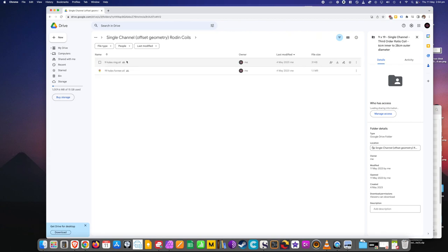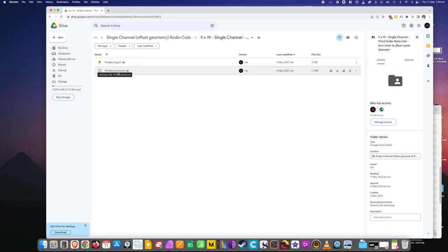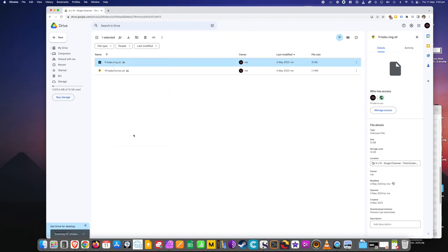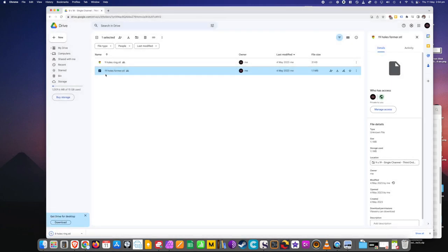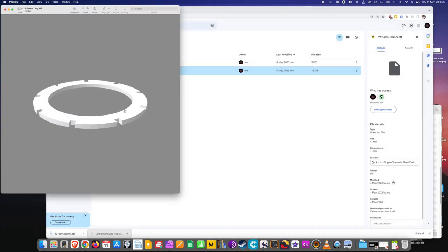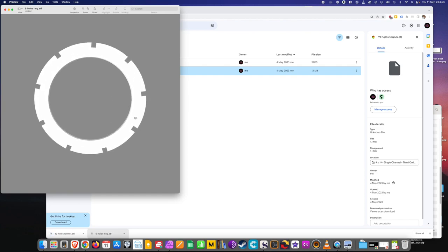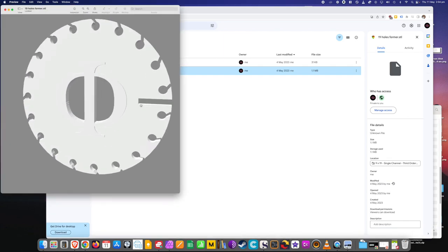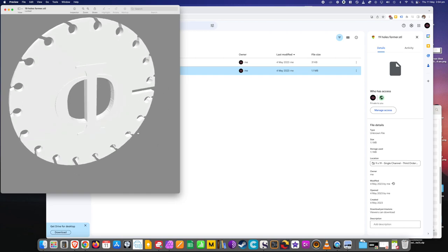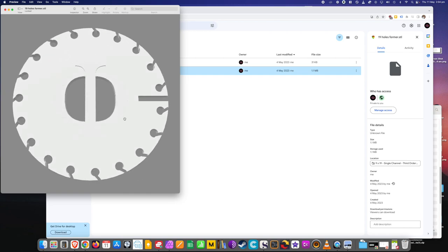If you open that up, you'll see there's two files in there, the 9-hole ring and the 19-hole former. So we'll just download those two. If you have a look at those files, this is the ring, so you'll see it's got the 9 holes in it there to slot the formers into. And this is our former here with 19 holes and the little fire sign on the center, which is a nice touch.